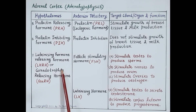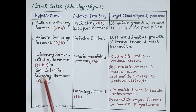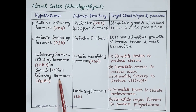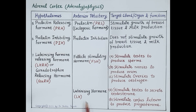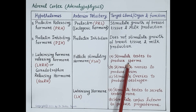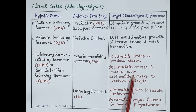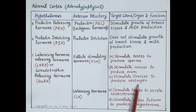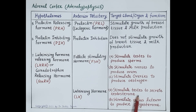Another important hormone produced by hypothalamus is LHRH (luteinizing hormone releasing hormone), also termed as GnRH (gonadotropin releasing hormone). This hormone stimulates release of FSH (follicle stimulating hormone) and LH (luteinizing hormone) by anterior pituitary. These hormones further stimulate ovaries in females and testes in males. FSH stimulates testes to produce sperms and stimulates ovaries to produce ovum and estrogen. LH stimulates testes to produce testosterone and stimulates the corpus luteum of ovaries to produce progesterone.